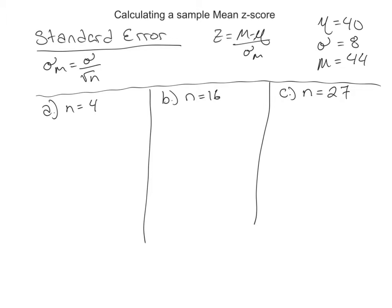In this video, we're going to go over how to calculate a sample mean z-score. In the first one, we're going to use a sample size of 4. For all of them, we're going to use a mean of 44, a standard deviation of 8, and a mu of 40.